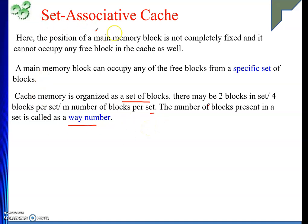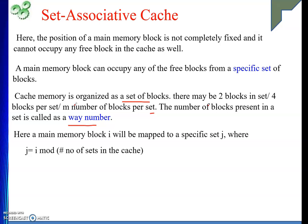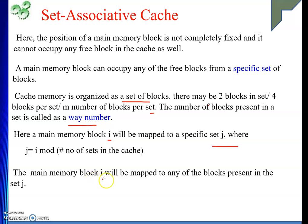So we use terms like four-way set associative cache, two-way set associative cache, or m-way set associative cache. For a main memory block I, it will be mapped to a particular set J — not to a particular block, but to a particular set. Where J equals I mod the number of sets in the cache. Previously it was number of blocks in the cache; this time it is number of sets in the cache. Whatever value we get, block I of main memory will be mapped into that set, and then inside that set, whatever block is free, we can occupy any one of them.